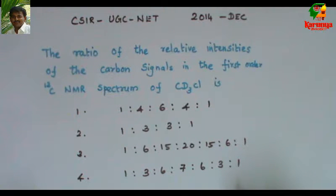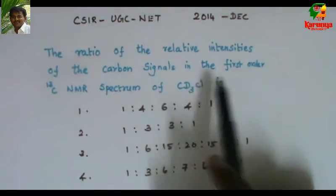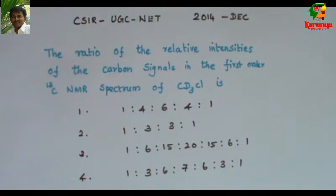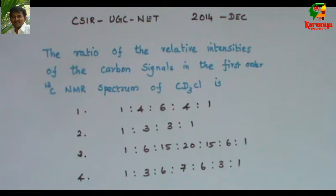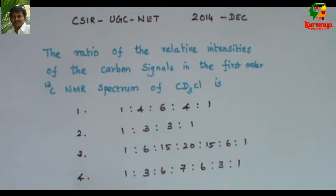Today I am going to solve a problem on C13-NMR. You can find this problem in CSIR NET exam 2014 December. Here is the problem. The ratio of the relative intensities of the carbon signals in the first order C13-NMR spectrum of CD3Cl is given. Several options are here, several ratios have been given, which one is correct.